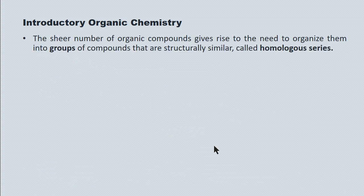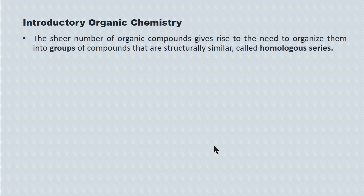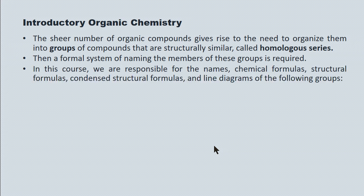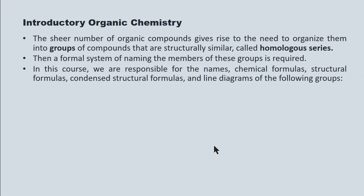The sheer number of organic compounds gives rise to a need to organize them into groups, which we call homologous series, and then after we've organized the groups, to develop a formal system of naming the members of each group. In this course, we're responsible for the names, chemical formulas, structural formulas, line diagrams, and the like for the following groups.